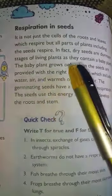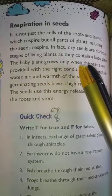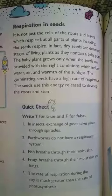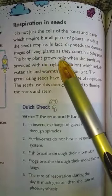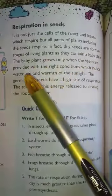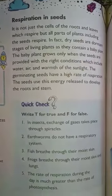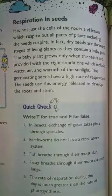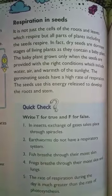Dry seeds are dormant stages of living plants, as they contain a baby plant. The baby plant grows only when the seeds are provided with the right conditions, which include water, air, and warmth from sunlight.